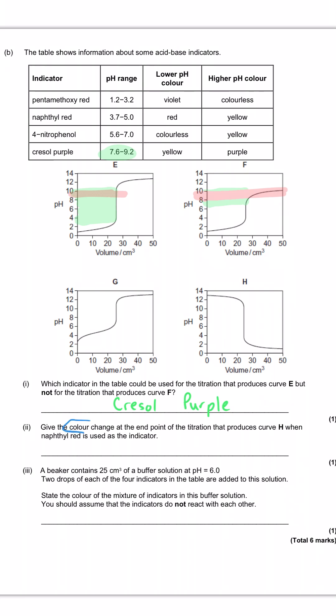And the next question asks us for the colour change for curve H when we use napthyl red. So curve H starts at a high pH, and so the napthyl red will be its yellow colour. And then once we reach equivalence, it will rapidly drop to about pH 2, and the napthyl red will go red. Again, both colours needed to get this mark.